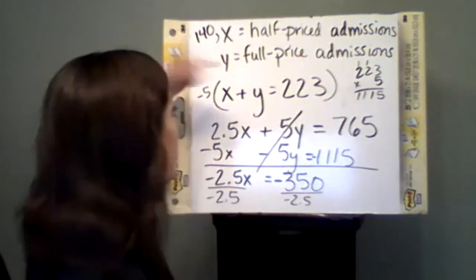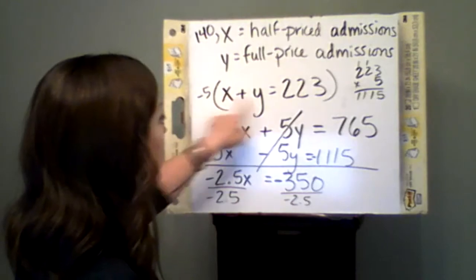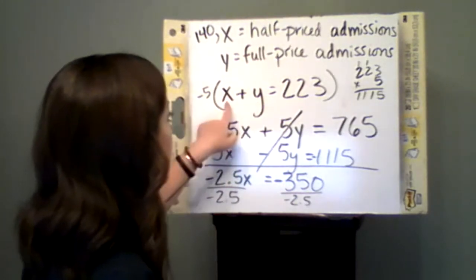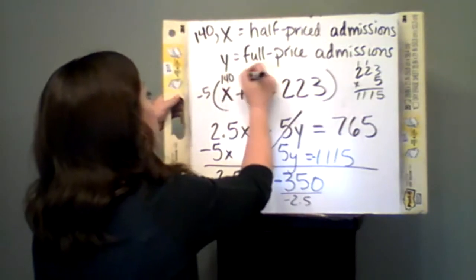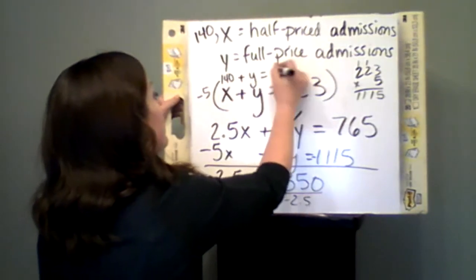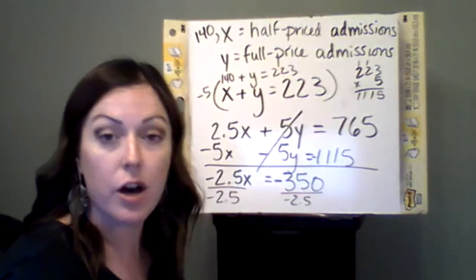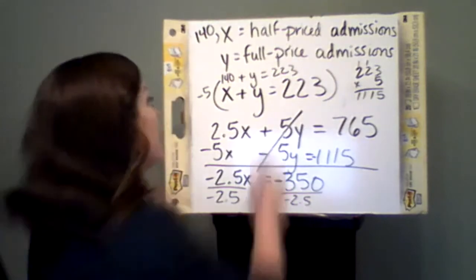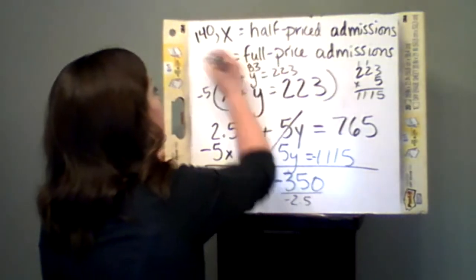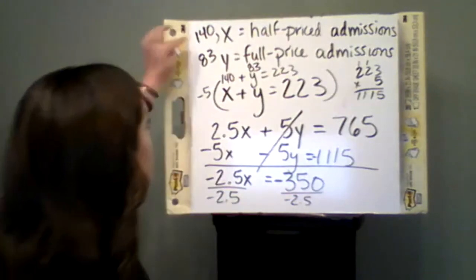That then lets me find out what the number of full-priced admissions is. I know that if I go back to this original equation and I plug in what I have for x, 140 plus y got me 223. So I need to subtract 140 from 223, and that gives me 83 full admissions values.